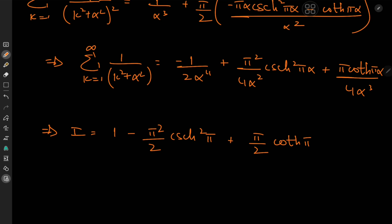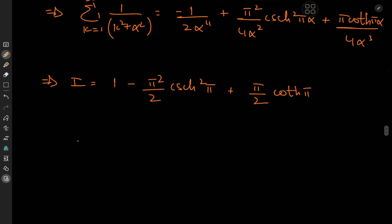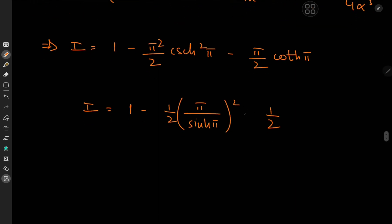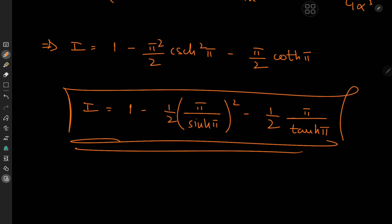Writing these in terms of reciprocal ratios, I equals 1 minus one half times (pi over sinh(pi)) squared, minus pi over tanh(pi). An absolutely gorgeous calculus result following from a beautiful integral, the solution to which involved some of my favorite tools and tricks. I hope you enjoyed the video — be sure to like and subscribe. Thank you, see you next time.